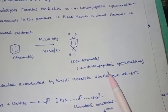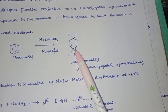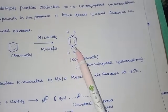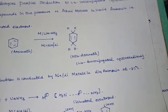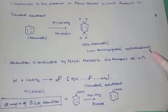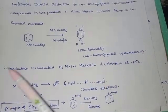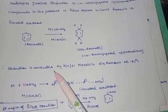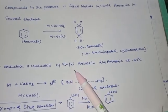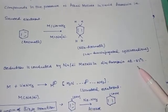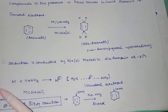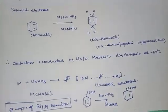The unconjugated cyclohexadiene is formed as the product. The reduction is conducted in liquid ammonia at minus 33 degrees Celsius, and this is the most important point.